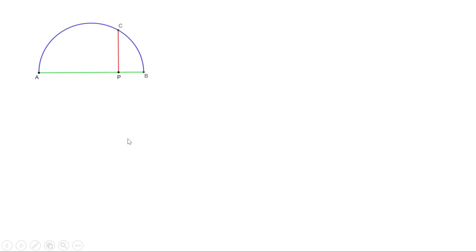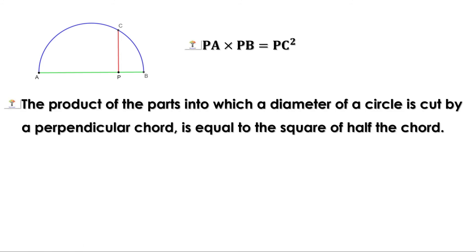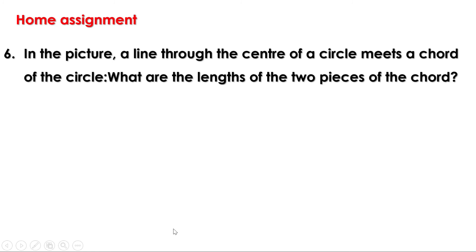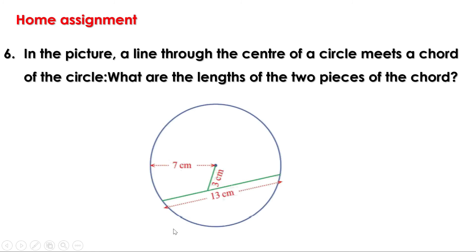Let us recall what we have learned today. AB is a diameter and PC is perpendicular to AB. Then PA into PB equal to PC square. Or, the product of the parts into which a diameter of a circle is cut by a perpendicular chord is equal to the square of half the chord. The area of the rectangle formed by parts into which a diameter of a circle is cut by a perpendicular chord is equal to the area of the square formed by half the chord. Now there is a homework: in the picture, a line through the center of a circle meets a chord of the circle — what are the lengths of the two pieces of the chord? I will be back with the remaining part.